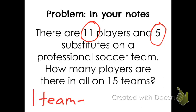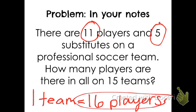So on one team, I've got 11 players on the field and five substitutes. So there's 16 players on one team. I'm looking at 16 players on each of my 15 teams. So I think that means I'm going to be multiplying 16 times 15 today.